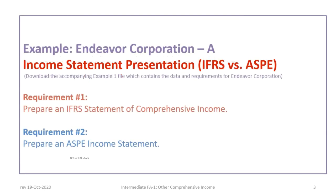This tutorial is based on the Endeavor Corporation A example covered in Tutorials 1 and 2. It is recommended that you review Tutorial 1 before proceeding, however Tutorial 3 can be reviewed independently. Make sure that you download the related file so you can follow along. The requirements for the Endeavor Corporation A example were to prepare an IFRS Statement of Comprehensive Income and an ASPE statement, and we will focus on the OCI section.